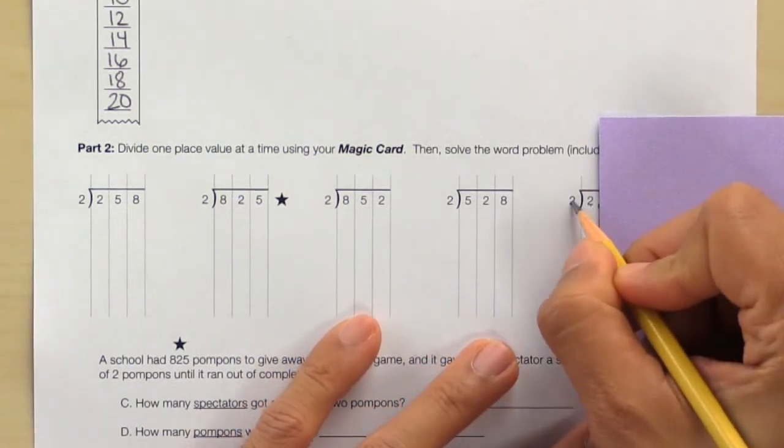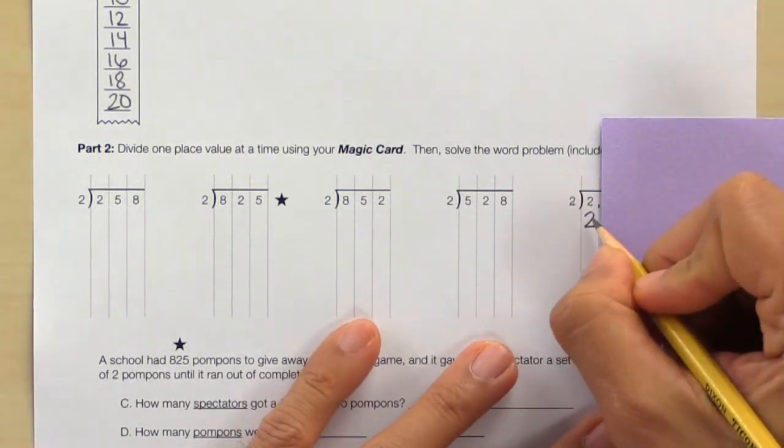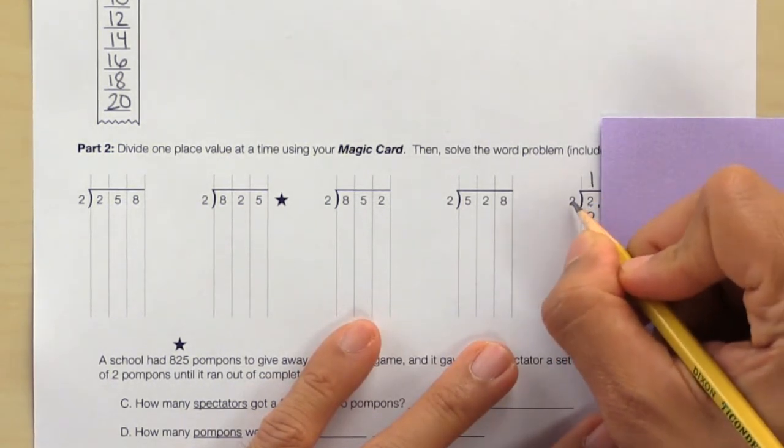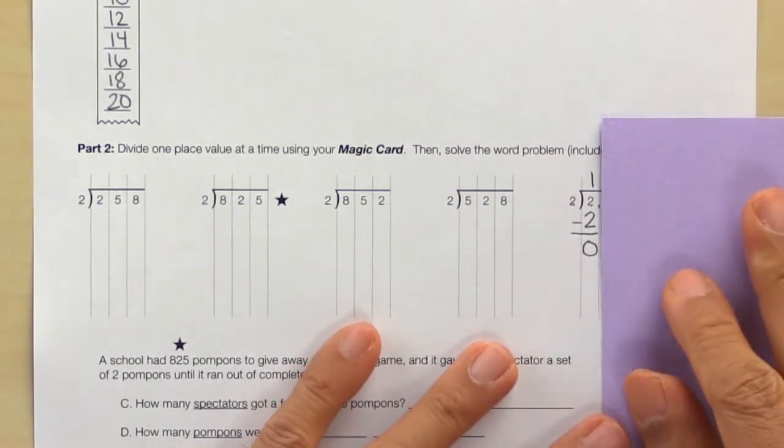Can we do 2 divided by 2? Yes. Write it down. If 2 divided by 2 equals 1, then 1 times 2 equals 2. Subtract and slide.